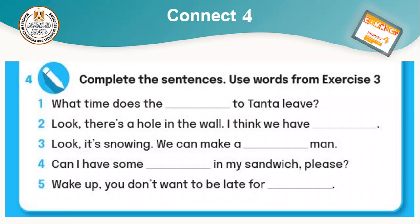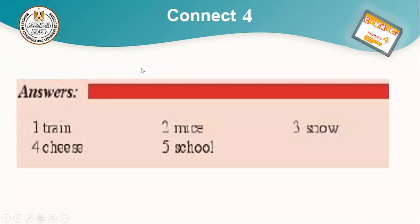Number four: Can I have some cheese in my sandwich, please? Number five: Wake up, you don't want to be late for school. Answers: number one — train, number two — mice, number three — snow, number four — cheese, number five — school.